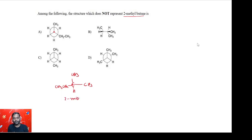Option B, you can directly see in this form only: one, two, three, four. There is a four-carbon chain and on the second carbon there is a methyl group, which means this is also representing 2-methylbutane.